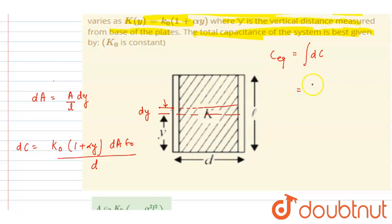Now you can put the value of dA in this expression and integrate it. So if I put the value of dA, it will be A/l into dy. You can take all the constant outside, that are K₀ε₀A/ld, all of these are constant, ε₀ is also constant,